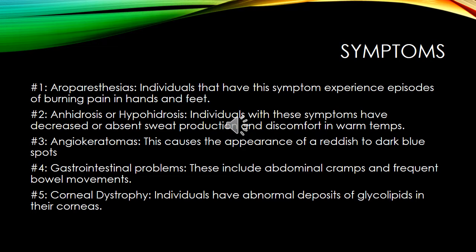The third symptom is angiokeratoma. This causes the appearance of reddish to dark blue spots. The fourth symptom is gastrointestinal problems. These include abdominal cramps and frequent bowel movements. The fifth symptom is corneal dystrophy. Individuals have abnormal deposits of glycolipids in their corneas.